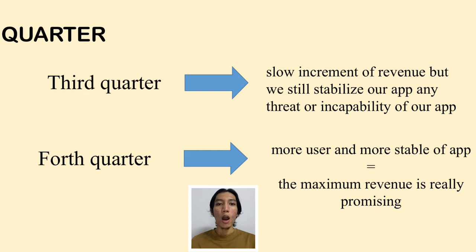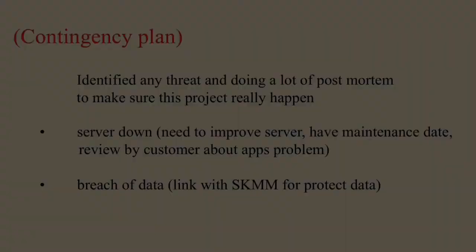For the last quarter, this is the phase we would really love to reach. By this phase, we already have more users and our application is fully stable. We can gain revenue to the maximum amount. Remember, the more users and the more stable the application, the more promising the maximum revenue.